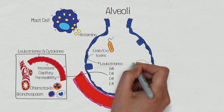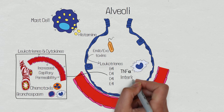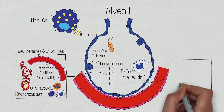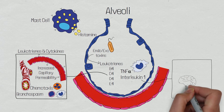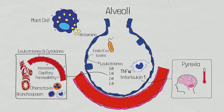Alveolar macrophages will attempt to phagocytose the bacteria and in the process will release cytokines such as tumour necrotic factor alpha and interleukin-1, which will further enhance the inflammatory cascade and are responsible for inducing pyrexia. This is done by acting on the hypothalamus and increasing the set point of normal body temperature. This serves a useful purpose as the immune system works more effectively at higher temperatures and provides an inhospitable environment for the pathogen, which is why it's not always in the patient's best interest to try and control temperature.